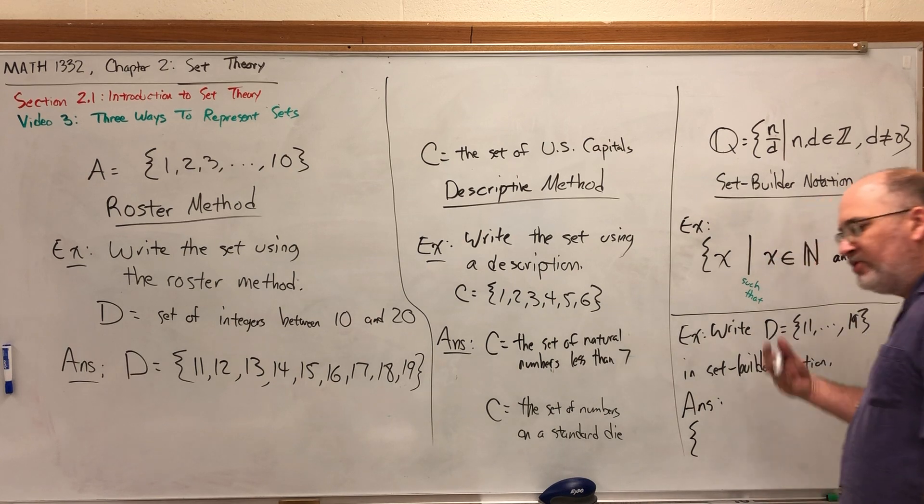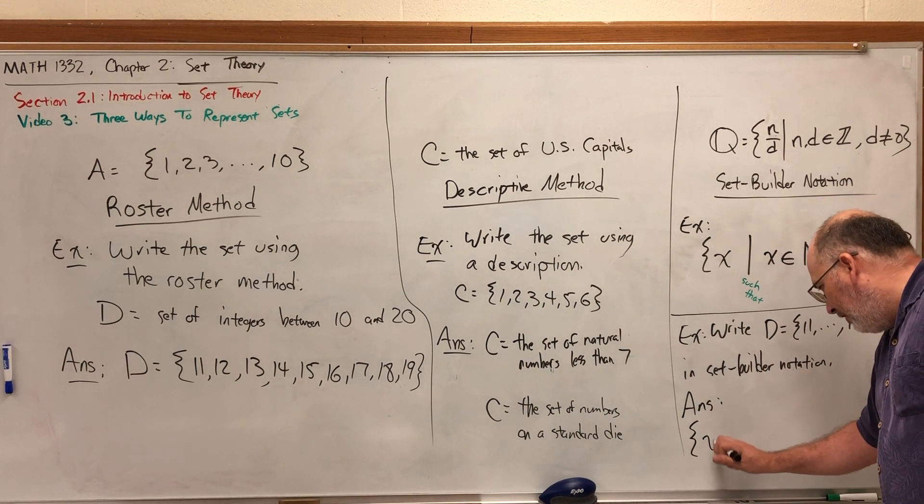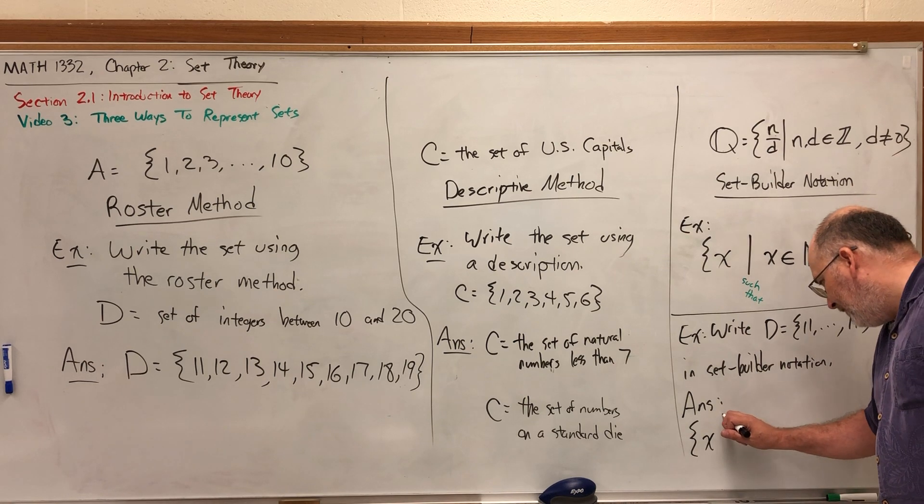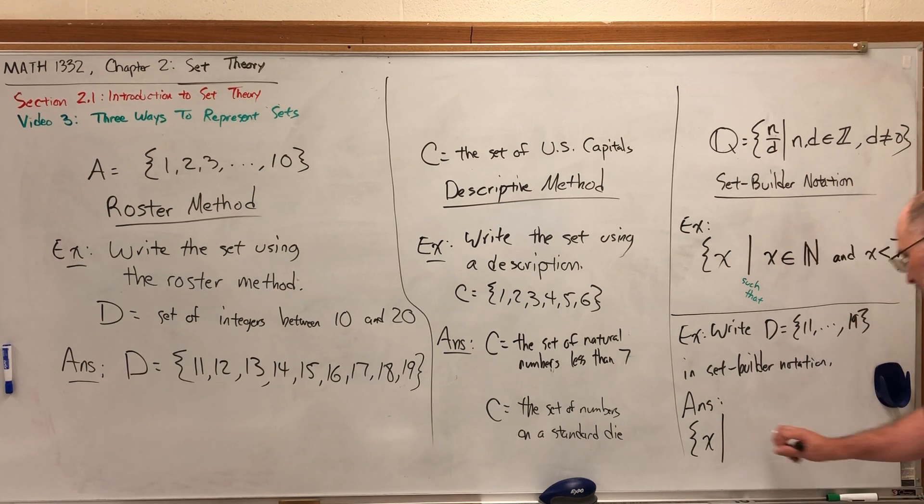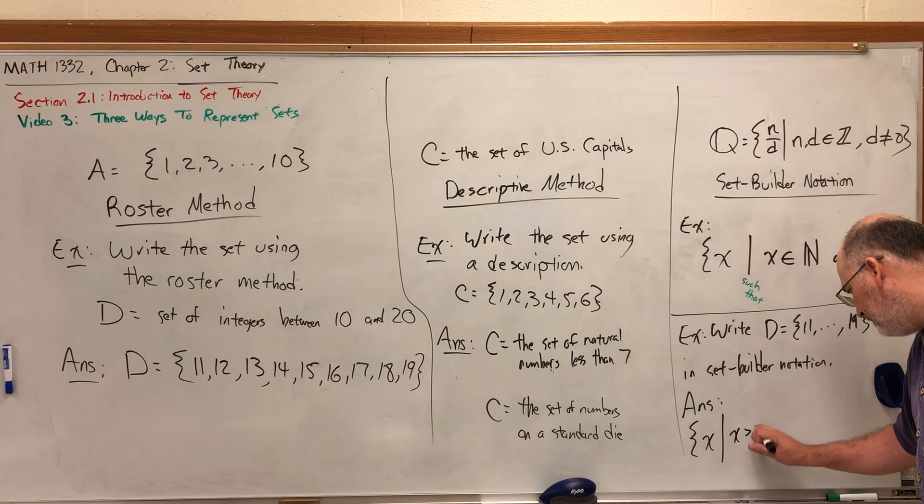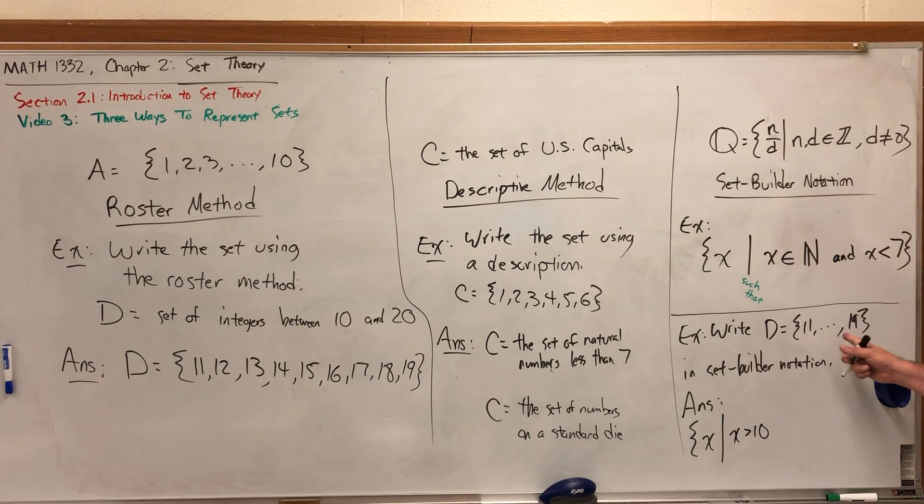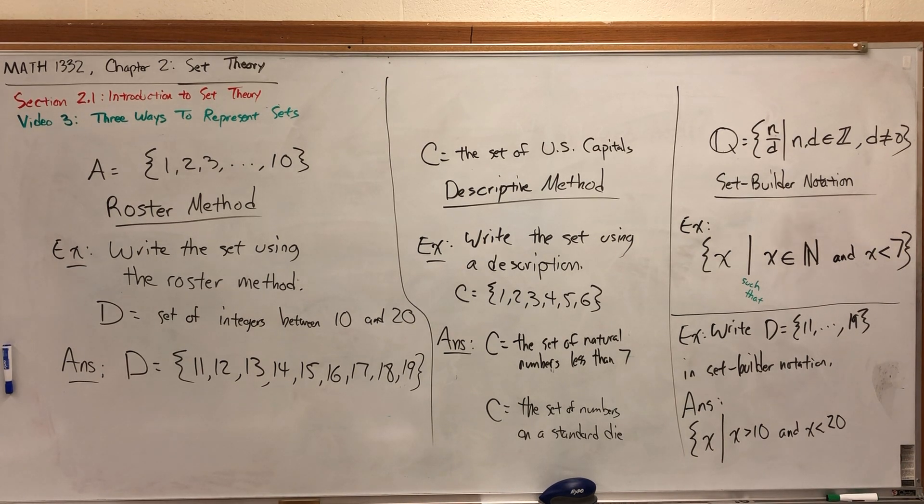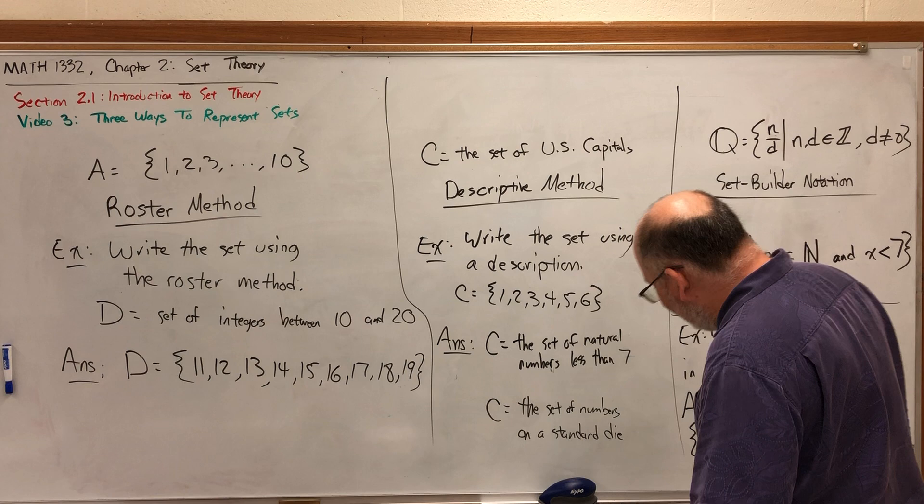The set of all, and then something generic, I'll always use an x unless I have a reason to use something else. The set of all x's such that x is greater than 10, because all the numbers in here are, and x is less than 20, because all the numbers in there are. However, if I close off this set right now, then I don't have 11, 12, 13, 14, 15, 16, 17, 18, and 19.